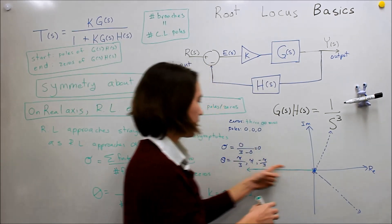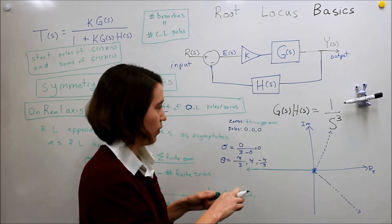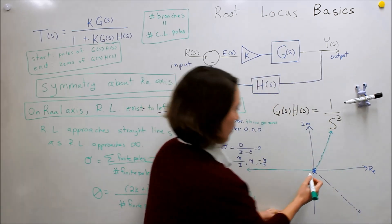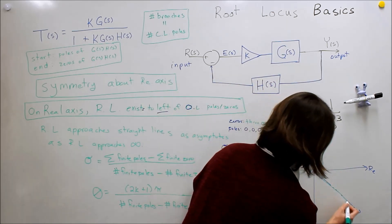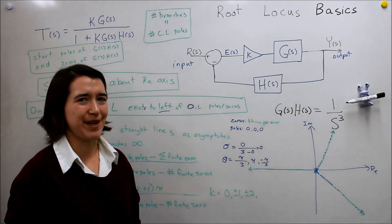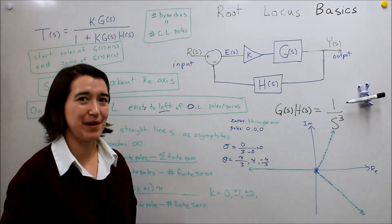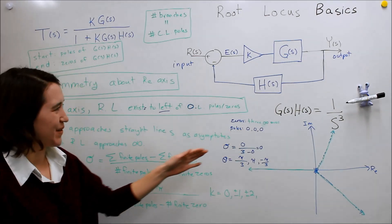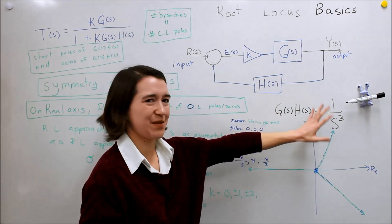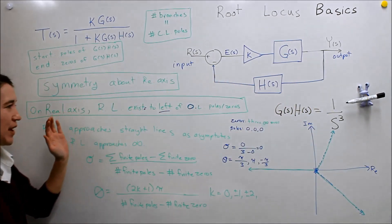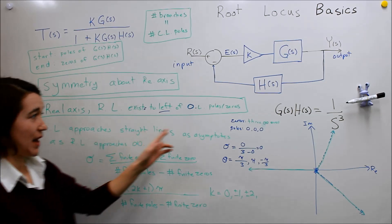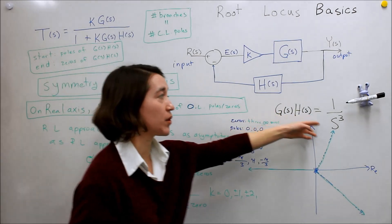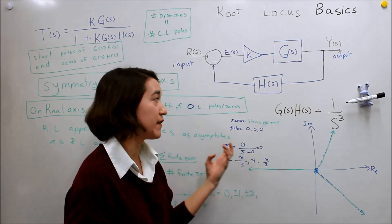My video got cut off again, which means I'm making my videos too long. But just to recap what we just did. For this example of one over s cubed, we were able to - we know that because we have zeros that go off into infinity, because they're not defined based on our open loop system, they're not finite, they're infinite. They go up into infinity.